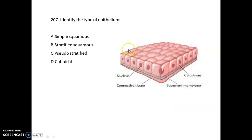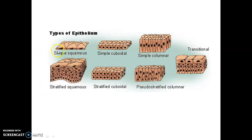Identify the type of epithelium given in the picture. This is an example of cuboidal epithelium. Let's see different types of epithelium: simple squamous epithelium, simple cuboidal epithelium with cuboidal cells, simple columnar epithelium, transitional epithelium, pseudostratified columnar epithelium, stratified cuboidal epithelium, and stratified squamous epithelium. Remember, the word 'stratified' means it has layers.